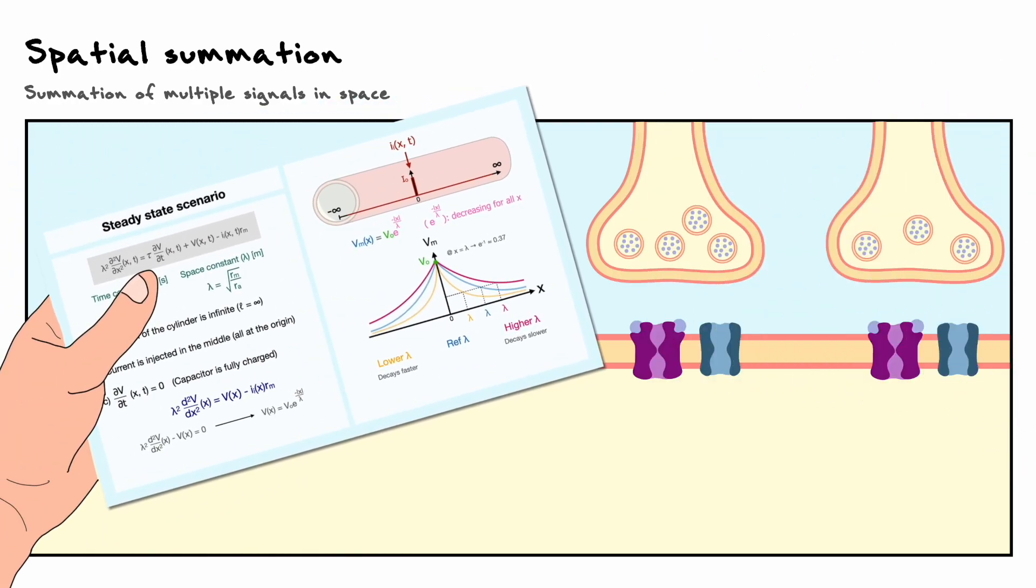From the video, we covered that signals decay as a function of space, and that a high value of the space constant means it decays slower relative to a smaller value. Hence, if we imagine two different pulses that are activated at the same time, the likelihood that the two will be summed together will be much greater if the space constant is higher since the signals will have decayed less.